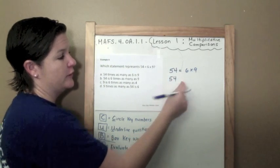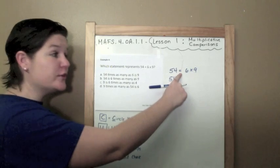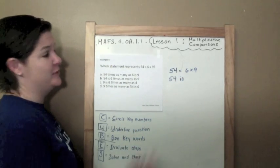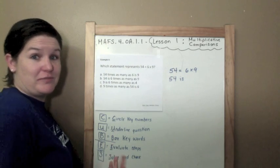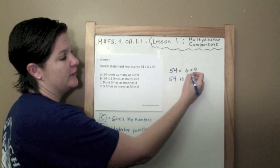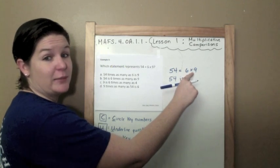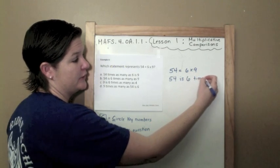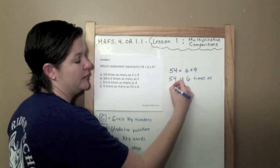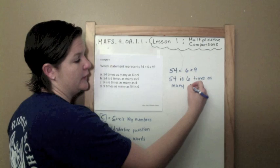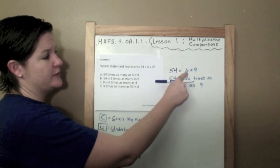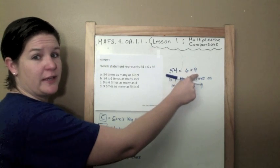So I'm going to drop this down and put this into words. 54—the word for equals when you're writing it out is 'is.' So when you see an equal sign, it really stands for is. 54 is six times as many as nine.